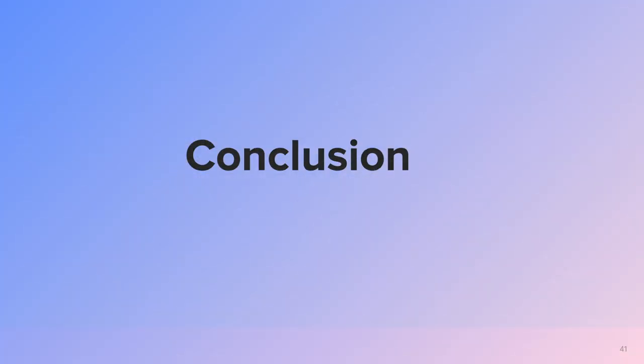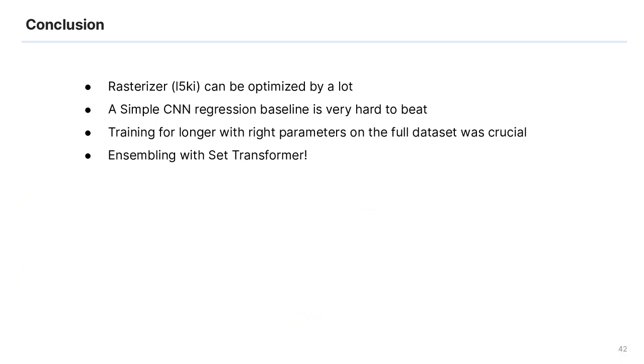As a conclusion, I would like to say several things. It was very important to optimize the rasterizer to train faster. A simple CNN regression baseline turned out to be the best model and is very hard to beat. As always, keep it simple. Training for longer with right parameters on the entire dataset was crucial. That transformer can be used for model ensembling and it lifted our team to the third place. Thank you guys, let me know in comments what you think about this video and have a happy Kaggling!